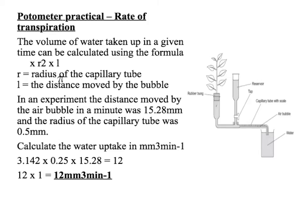Here is the equation to work out the volume in a cylinder: pi times the radius squared times l, where r is the radius of the capillary tube — half of the diameter — and l is the distance that the bubble has moved, the length the bubble moved in the capillary tube.